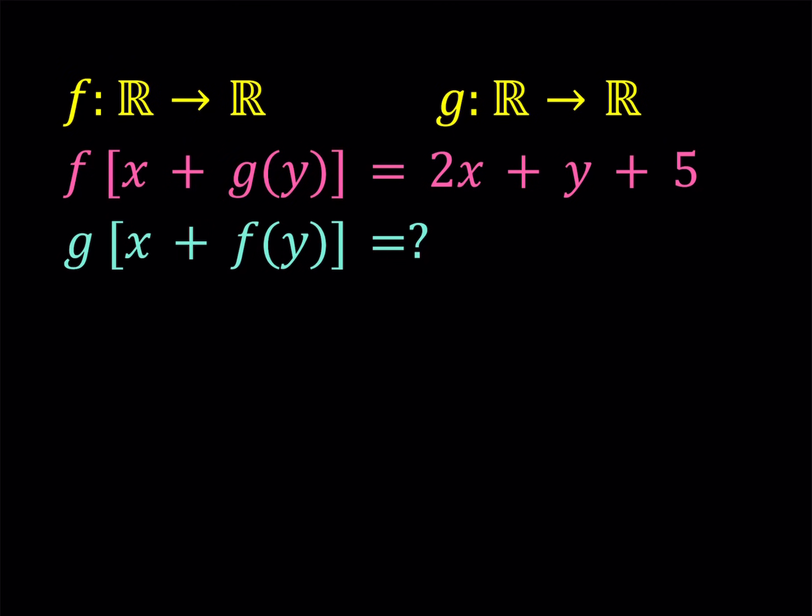So we have two functions f and g. They're both from reals to reals. And we are given an equation: f of x plus g of y equals 2x plus y plus 5. And we're supposed to find an explicit expression for g of x plus f of y. So something that looks like the first equation, we're going to find something in terms of x and y.